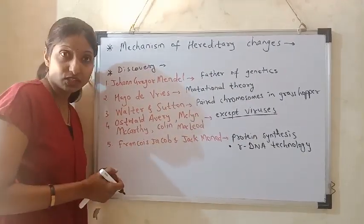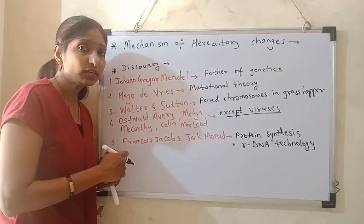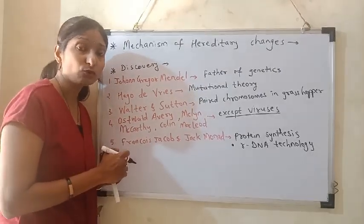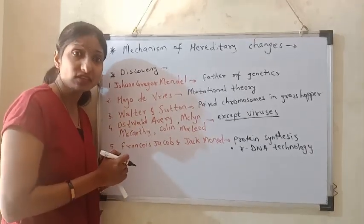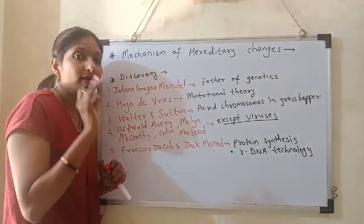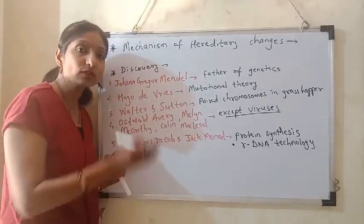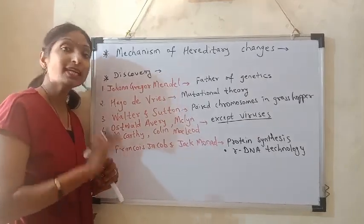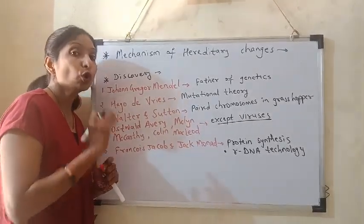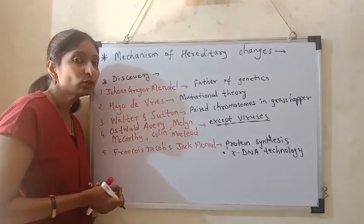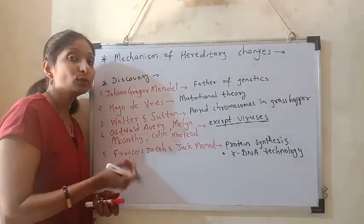Now let us study the discoveries regarding these things. Who discovered chromosomes? Who discovered DNA? We studied this in 9th standard. Watson and Crick — that answer is wrong. Watson and Crick did not discover DNA; they explained the structure or the model of DNA. Find the answer from your 9th standard textbook. Hint: the first scientist who discovered DNA studied white blood cells of the human body, and then he found the DNA.